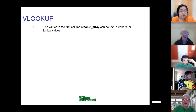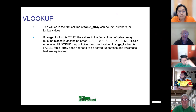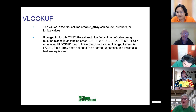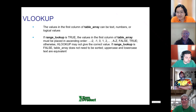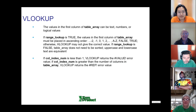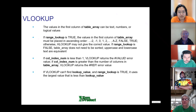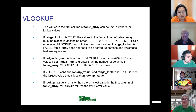The help text continues: if range_lookup is TRUE, the values in the first column of table_array must be in ascending order, otherwise VLOOKUP may not give the correct value. If range_lookup is FALSE, table_array does not need to be sorted. If col_index_num is less than 1, VLOOKUP returns #VALUE; greater than the number of columns returns #REF. If VLOOKUP can't find the lookup_value and range_lookup is TRUE, it uses the largest value less than lookup_value. If lookup_value is smaller than the smallest value, it returns #N/A. So we managed to get three error messages out of it.